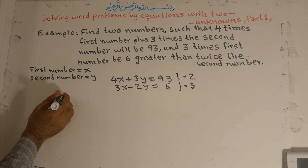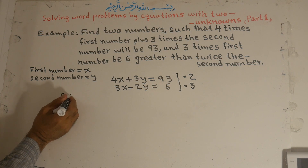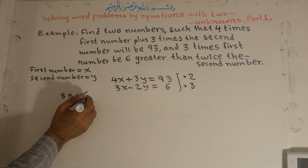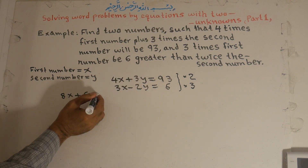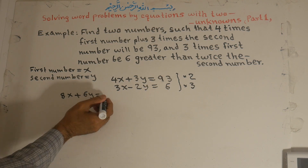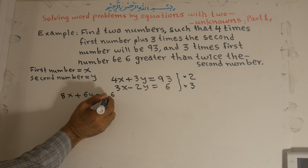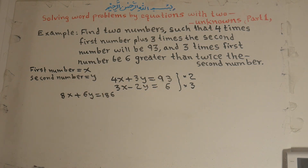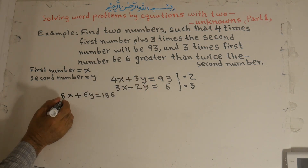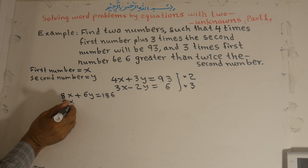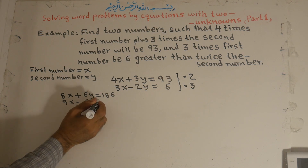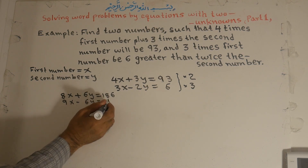After multiplying: 2 times 4 is 8x, plus 2 times 3 is 6y, equals 2 times 93 which is 186. And the second equation: 3 times 3 is 9x, minus 3 times 2 is 6y, equals 3 times 6 which is 18.